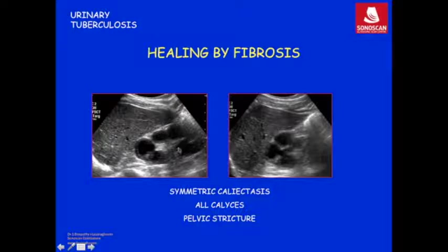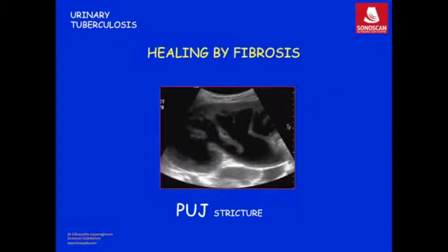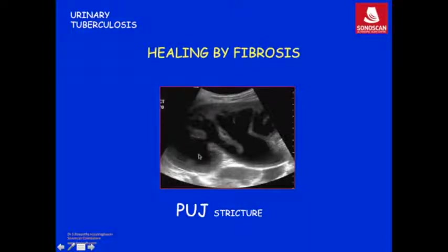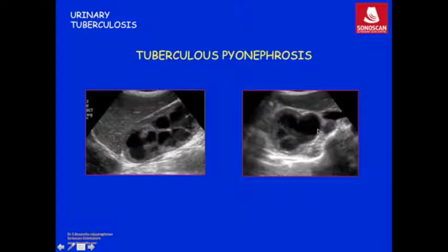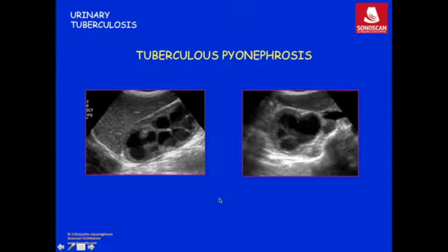Calycectasis can also be symmetric, where all calyces are symmetrically dilated on both coronal and axial scan due to a pelvic stricture. The fibrosis can involve the pelviureteric junction resulting in a PUJ stricture with hydronephrosis and dilatation of calyces and pelvis. As evidence of tuberculosis, you will also see urothelial thickening and a cavitating granuloma in the upper pole. Another appearance is tuberculous pyonephrosis — hydronephrosis with a fluid-fluid level indicating debris inside the collecting system.